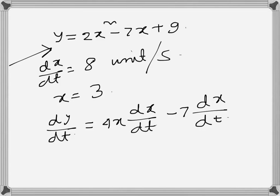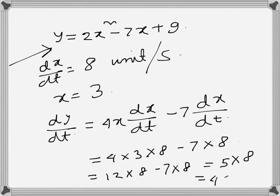So all we have to do is plug in these values in the right-hand side: 4 times 3 times 8 minus 7 times 8. So that's 12 times 8 minus 7 times 8, or we can say this is 5 times 8, so that's 40 units per second. That's how y will change if x changes this way and the value of x is 3.